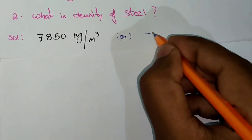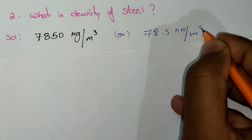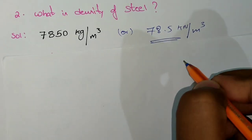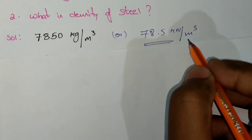How does it become 78.5 kN per meter cube from 7850 kg per meter cube? It depends on what type of density it is - mass density or weight density. I will make a separate video on density soon.